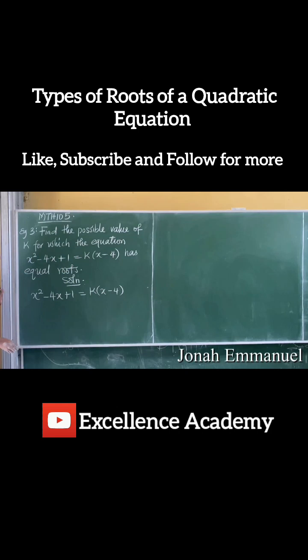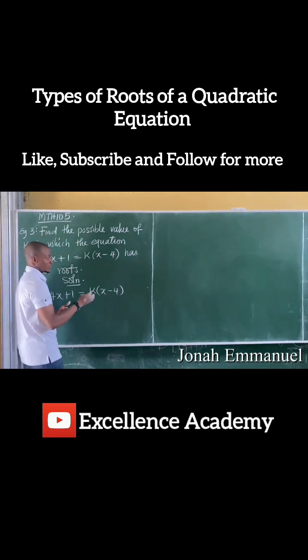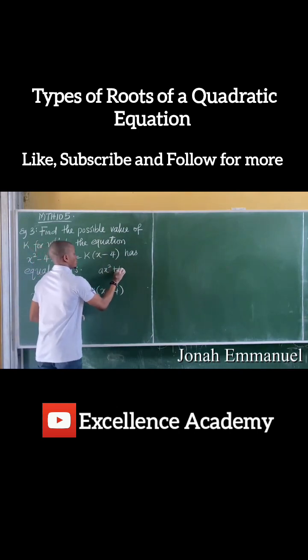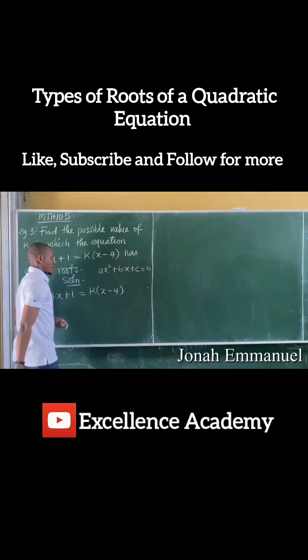Alright, so how do we solve this? The first case would be this. Remember that for the quadratic equation, the general form is ax squared plus bx plus c equal to 0.